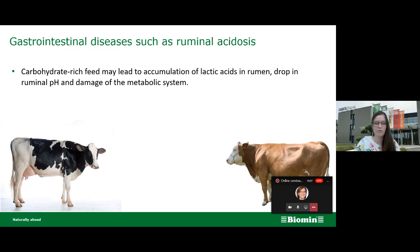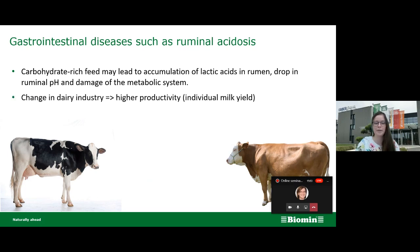There are several forms of ruminal acidosis: acute ruminal acidosis and subacute ruminal acidosis. Especially in dairy cattle, the subacute form is relevant, and this is mainly caused by changes in the dairy industry that we have observed in recent history.